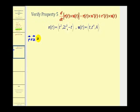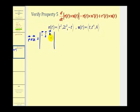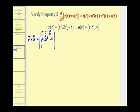We'll evaluate a three by three determinant where the first row is the i, j, k vectors. The second row will be the components from the vector valued function r: t squared, two t cubed, and negative t. The third row will come from the vector valued function u: t, t to the fourth, and four.